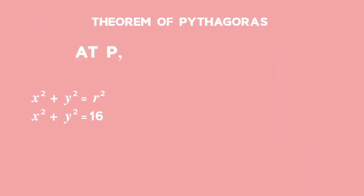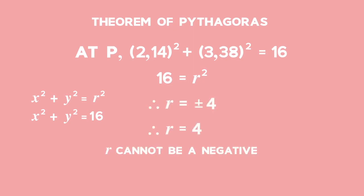At P, with x equal to 2.14 and y equal to 3.38, we get x squared plus y squared equal to 16 rounded off to two decimal places. So the radius is 4. It cannot be a negative number because it is a distance.